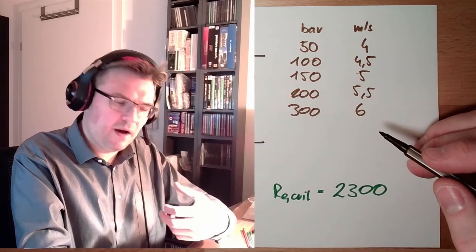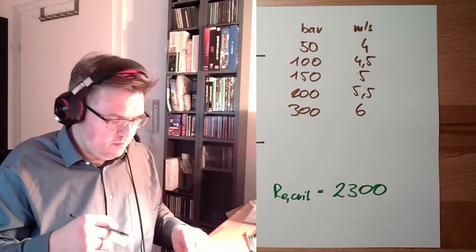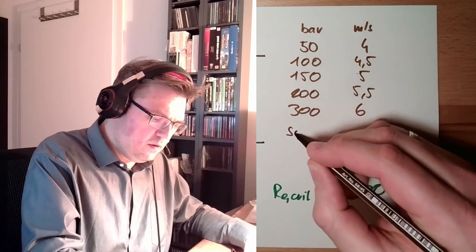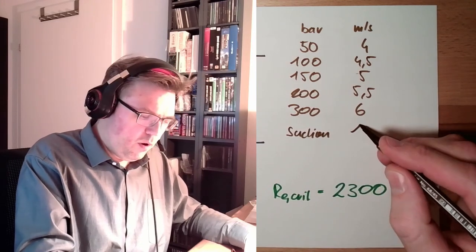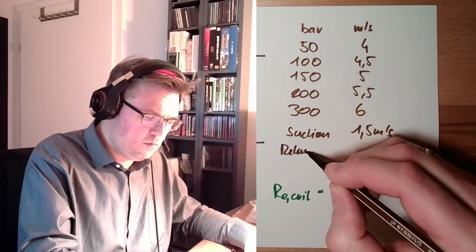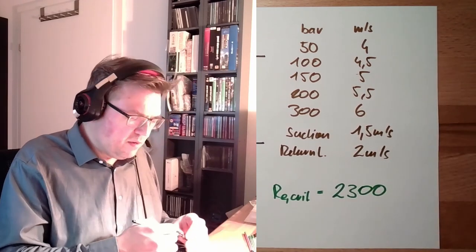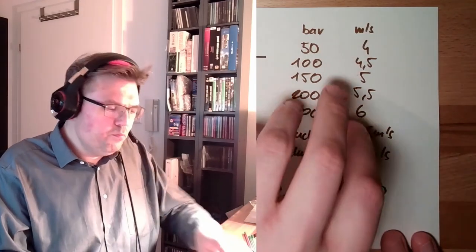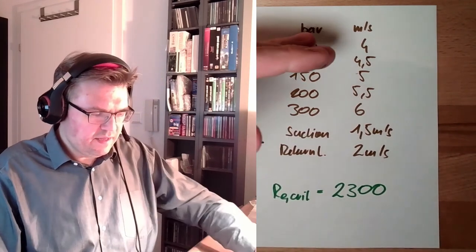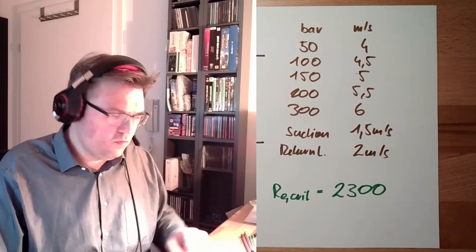If there is the suction line of the pump. So, where the pump is sucking in the oil. There is not much pressure at all. Even it is below the ambient pressure, of course. So, the suction line, we are at around 1.5 meters per second. And at the return line, we are around 2 meters per second. So, this is the usual speeds or the maximum speeds, the critical speeds to prevent turbulent flow. Like I said, the higher the pressure, the higher the speed can go. The lower the pressure, the lower the speed must be to stay in laminar.